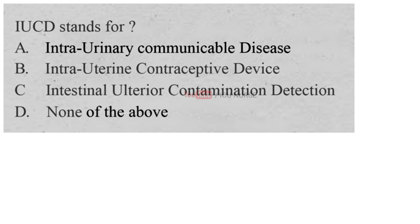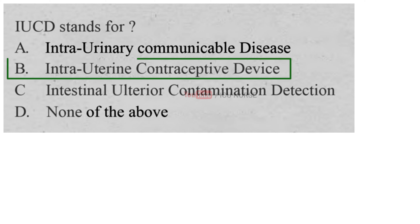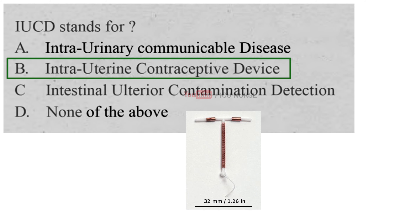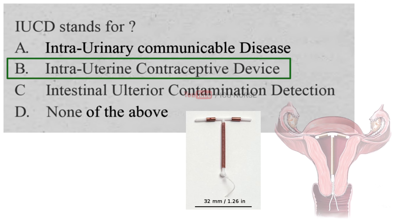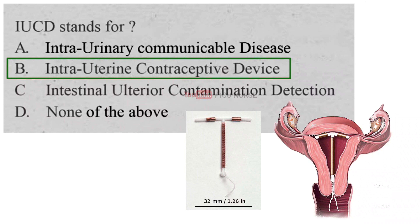IUCD stands for: A. Intra-urinary communicable disease, B. Intra-uterine contraceptive device, C. Intestinal ulterior contamination detection, D. None of the above. And the correct answer is B. Intra-uterine contraceptive device. IUCD, also known as the coil, is a small, often T-shaped birth control device inserted into the uterus to prevent pregnancy. It is a highly effective and reliable method of contraception that lasts for 5 years or more.